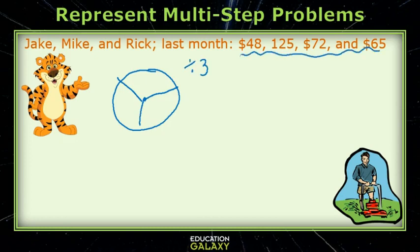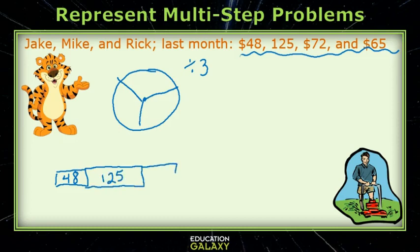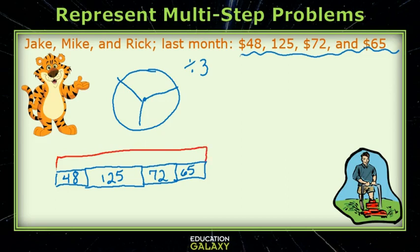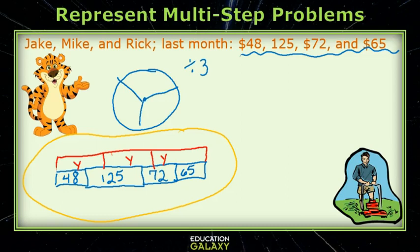So how do I get the total of all of this money? Simply add. Here's what the strip diagram would look like. I have $48, and then I have $125, so I'm making it bigger. And then I have $72 and $65. So imagine that this red box represents the total. I would take that total and divide by three to get each boy's part. This is an example of a strip diagram for a multi-step problem.